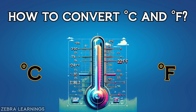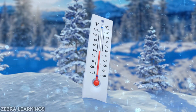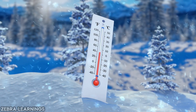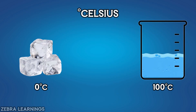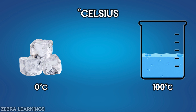We are going to learn how to convert from Celsius to Fahrenheit in this video. Celsius and Fahrenheit are the units used to measure temperature. The Celsius unit is based on the freezing point of water at 0 degrees Celsius and the boiling point at 100 degrees Celsius.